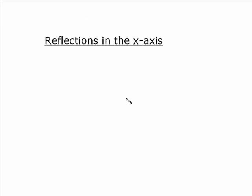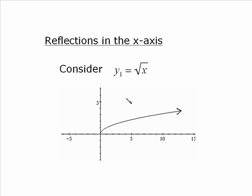So starting off with reflections in the x-axis, I'm going to begin with a square root graph, y₁ is equal to square root x. Now you can put this in your calculator, that's sort of the intention, although you probably know what the graph looks like already. And this is what we're going to get for a graph, classic square root function.